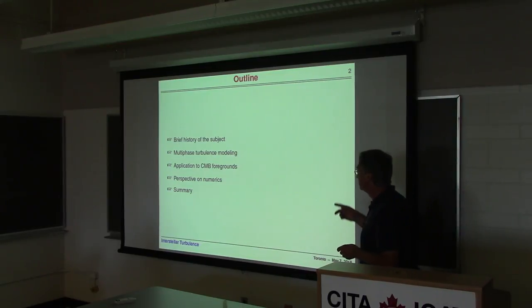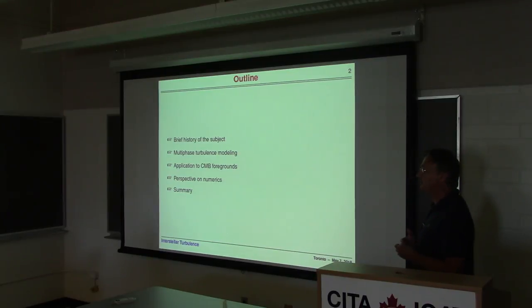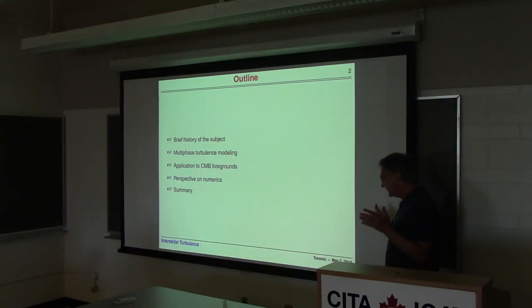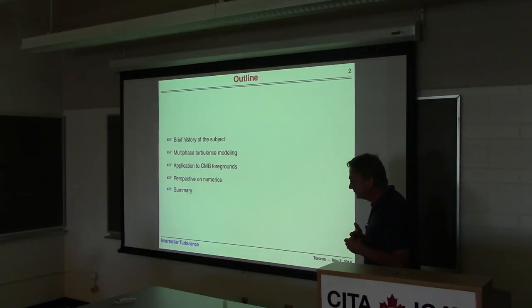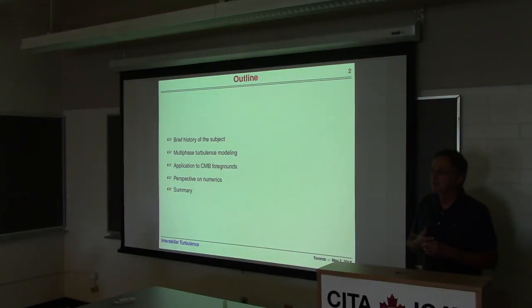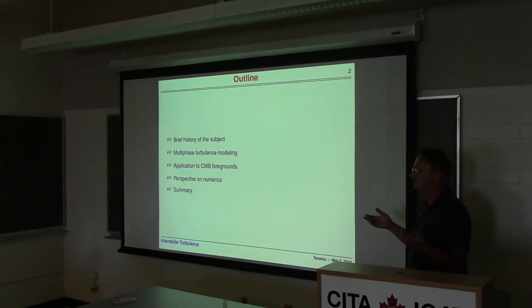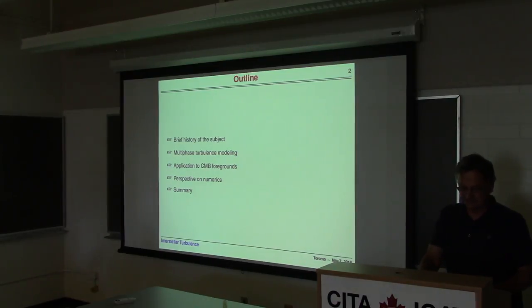I would like to start with a bit of history, because we want to understand how we got here in interstellar turbulence, and that would explain what we know and don't know right now. Then I'll talk about different sorts of multiphase models for the ISM and how stars form in molecular clouds. I'll also discuss CMB foregrounds and give some perspective on numerics if I have time.